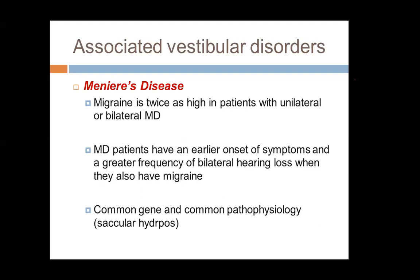Similarly, migraine is twice as high in patients with Meniere disease — both unilateral and bilateral. It is very possible that there is a common gene and common pathology between Meniere disease and vestibular migraine. It has also been found that Meniere patients with migraine tend to have earlier onset of symptoms and greater frequency of bilateral hearing loss than Meniere patients without migraine.